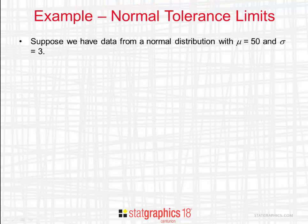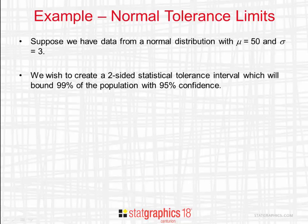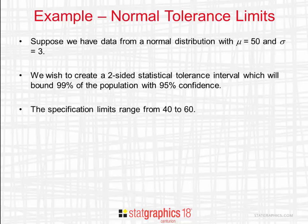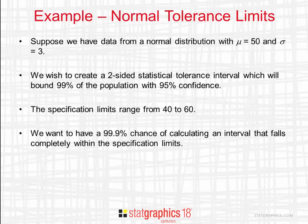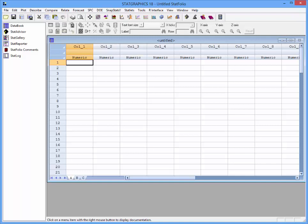As an example, suppose our data come from a normal distribution with a mean of 50 and a standard deviation of 3. We wish to create a two-sided statistical tolerance interval which will bound 99% of the population with 95% confidence. The specification limits range from a low of 40 to a high of 60. We want a 99.9% chance that when we calculate a tolerance interval, it falls completely within the specification limits.